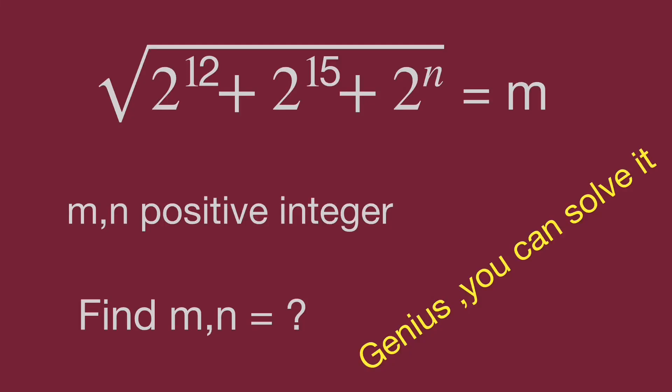Hello, you are watching Bala Hippo math genius riddle. The question is: square root of 2 power of 12 plus 2 power of 15 plus 2 power of n, equal to n, where n is a positive integer.